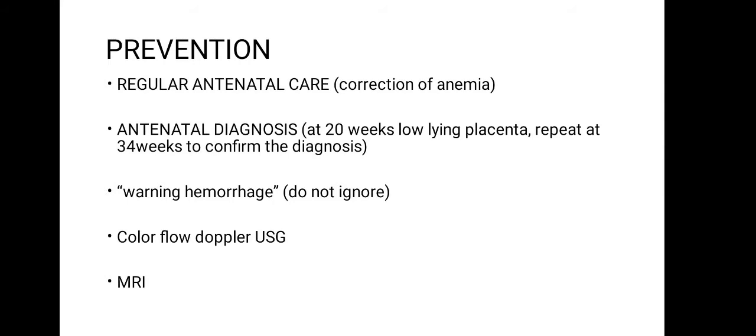Do not ignore any kind of hemorrhage — even though vaginal bleeding in placenta previa is painless and without apparent cause, every hemorrhage must be taken into account. Color flow Doppler USG is performed to diagnose placenta previa, but MRI is always superior and more accurate — even posterior placenta previa, placenta accreta, and placenta increta can be diagnosed with MRI. Following proper prevention guidelines including regular antenatal care, USG, MRI, and accounting for all hemorrhage is essential.